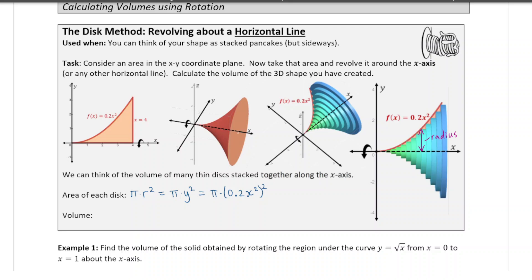To add up the volumes of all of those disks using an integral: the volume equals the integral from 0 to 4 — because 0 is where the disks start and 4 is where they end — of π times (0.2x²)² dx. The dx is like the little width of each disk. The volume of each disk is π times radius squared times dx, and we add all of those up to get our total volume.